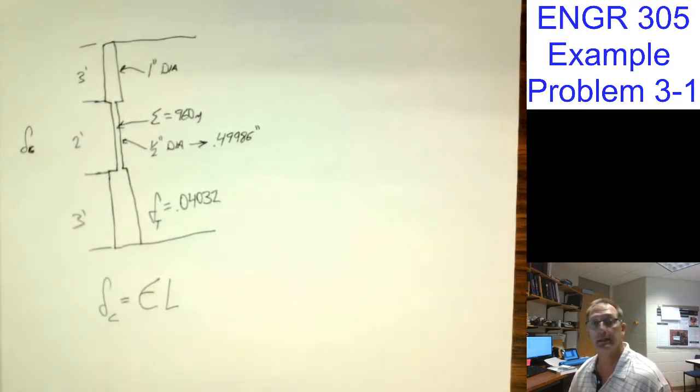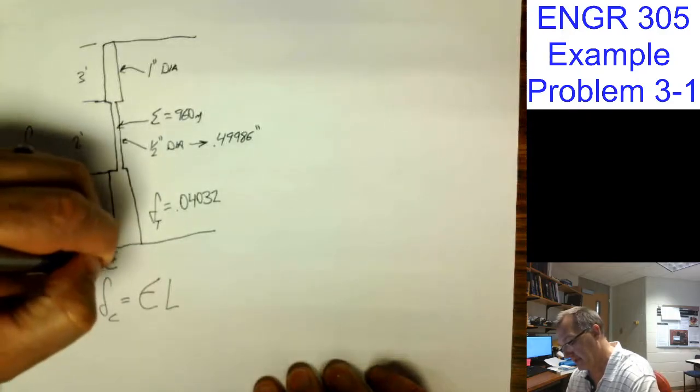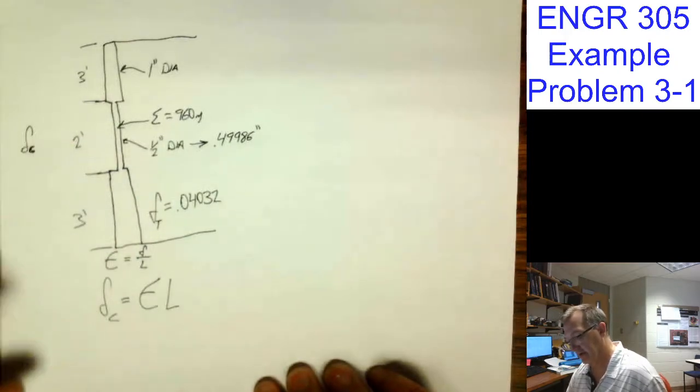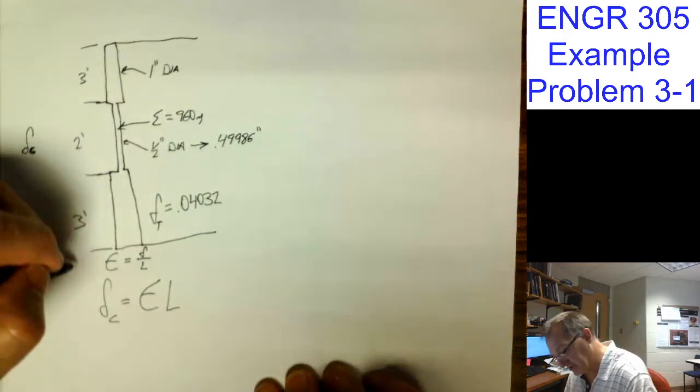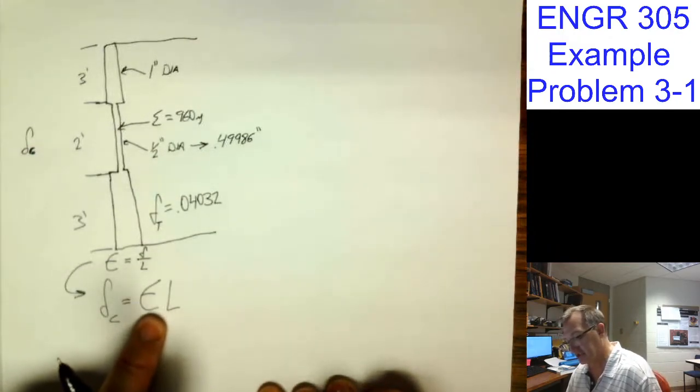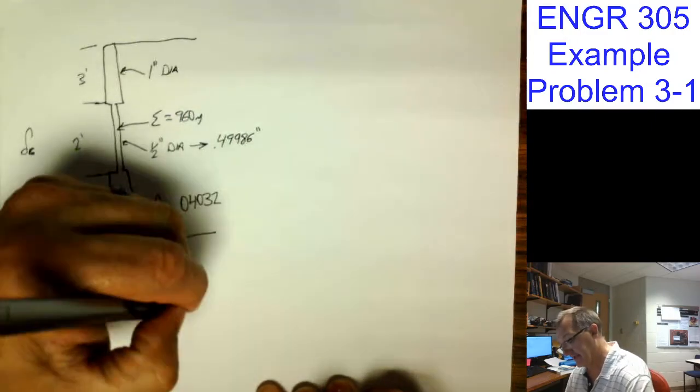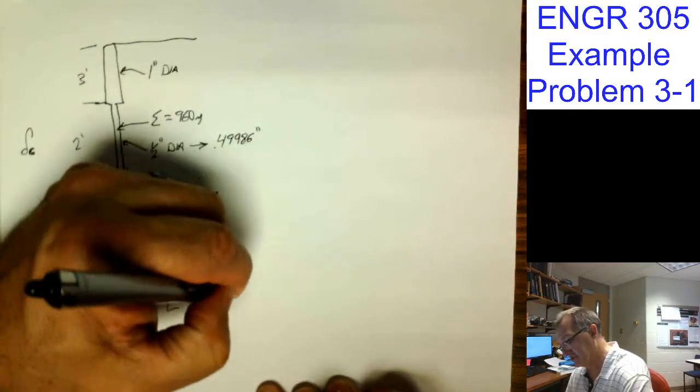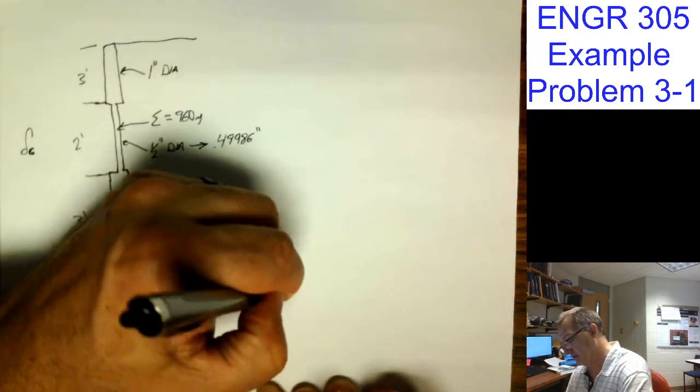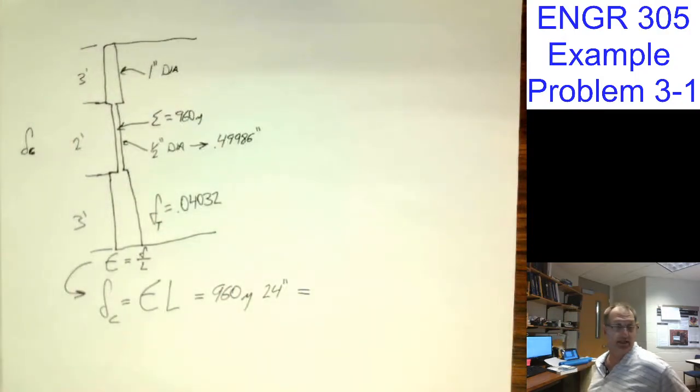Well, let's not jump to that. Our definition is that epsilon is equal to delta over L. So therefore, the delta, how much the center changes, is equal to the strain for the middle times the length of the middle. So that's equal to 960 micro times 24 inches. Got to get the trusty dusty calculator out.